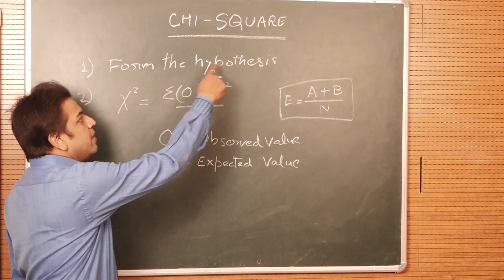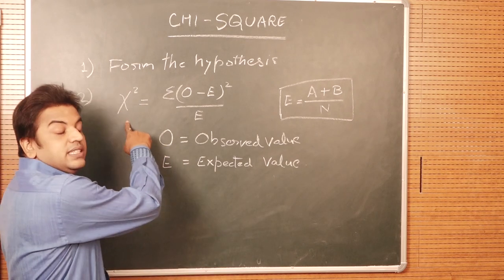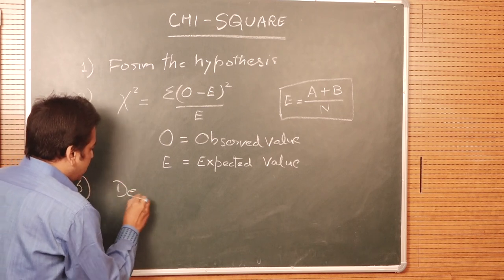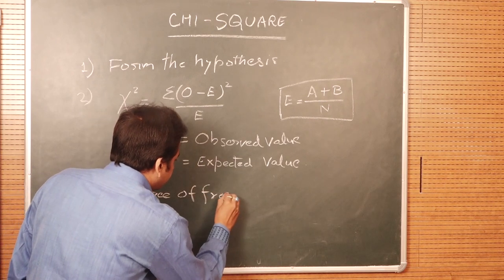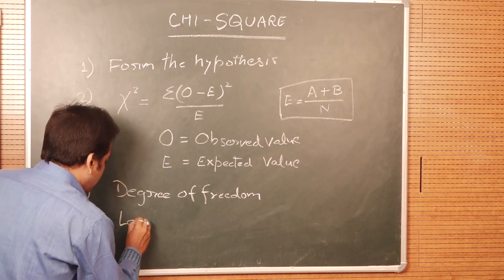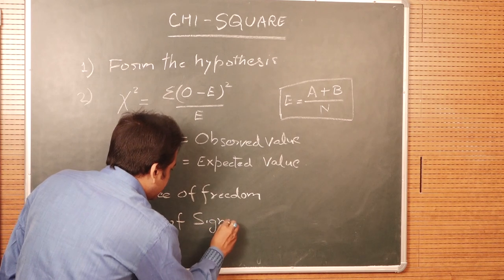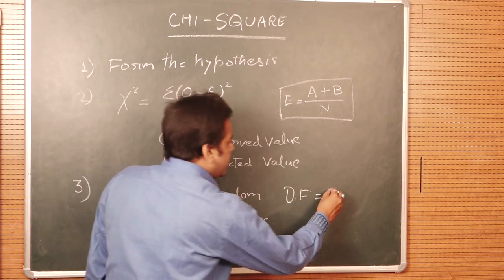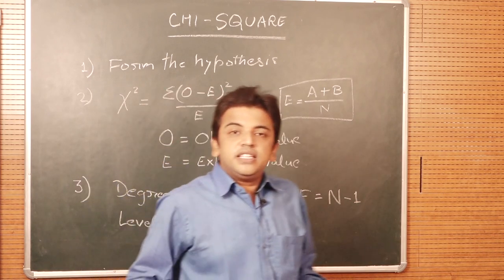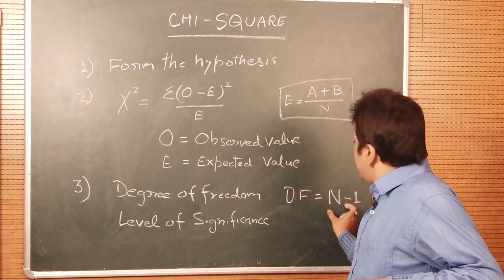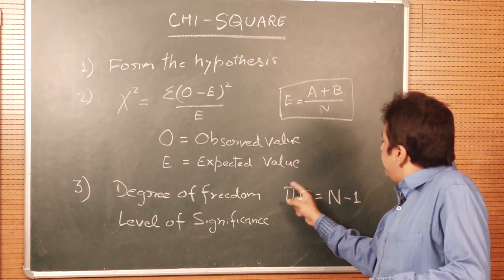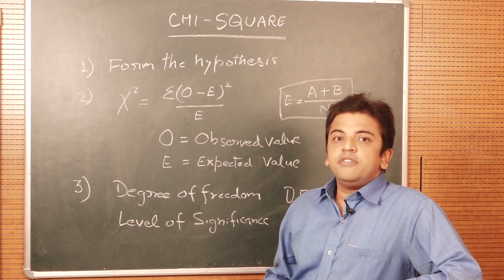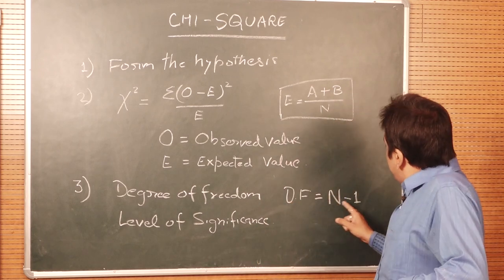The third step is to calculate the degree of freedom and level of significance. Degree of freedom is always n minus 1. For example, if we are collecting a sample of 5 people, the degree of freedom is 5 minus 1, which is equal to 4. If we take data of 10 people, the degree of freedom is 10 minus 1, which is equal to 9.